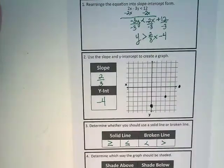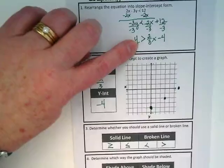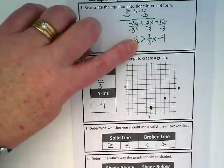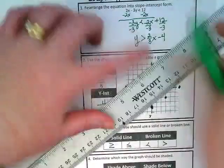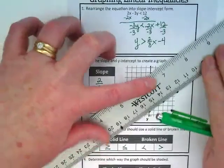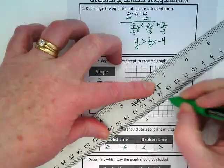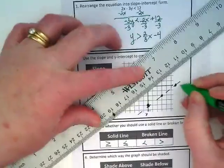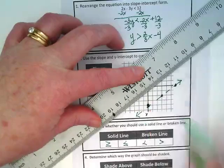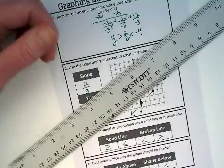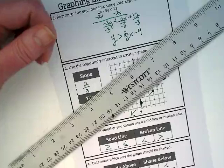This is where I asked you to get a straight edge. Because we have to think, is this a broken line or a solid line? What kind of symbol do we have? Greater than. So it's not going to be a solid line. And I want you guys to watch how I do it. I'm using a pen. So I'm just going to make a dashed line here. If you have a pencil, you could draw the solid line and then go back and erase parts of it.